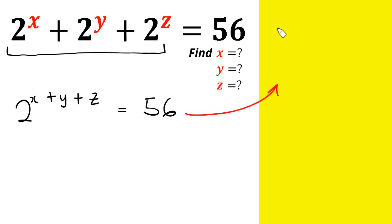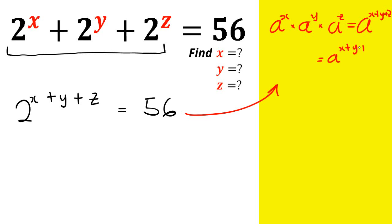Let's check if that rule is actually applicable here. The rule states: a raised by the power of x times a raised by the power of y times a raised by the power of z equals a raised by the power of x plus y plus z. That rule is correct, but check the difference — in that basic rule, there is a multiplication sign between the terms. In our expression, we have an addition sign, which makes them different.